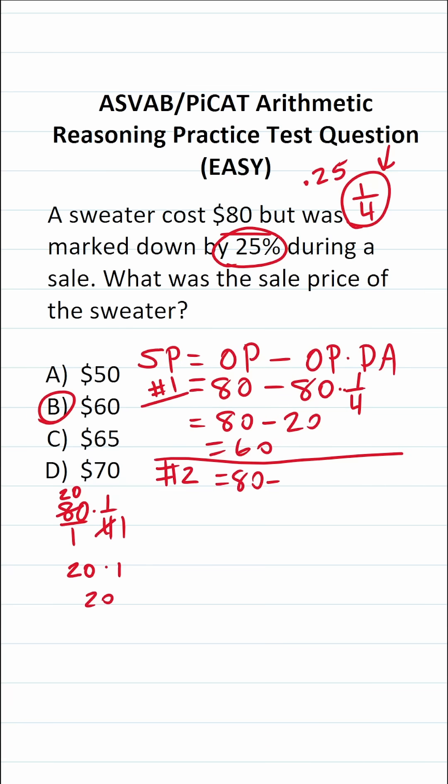It's going to be 80 minus 80 times. Again, we're going to use the decimal equivalent, 0.25. Let's go ahead and work it out.